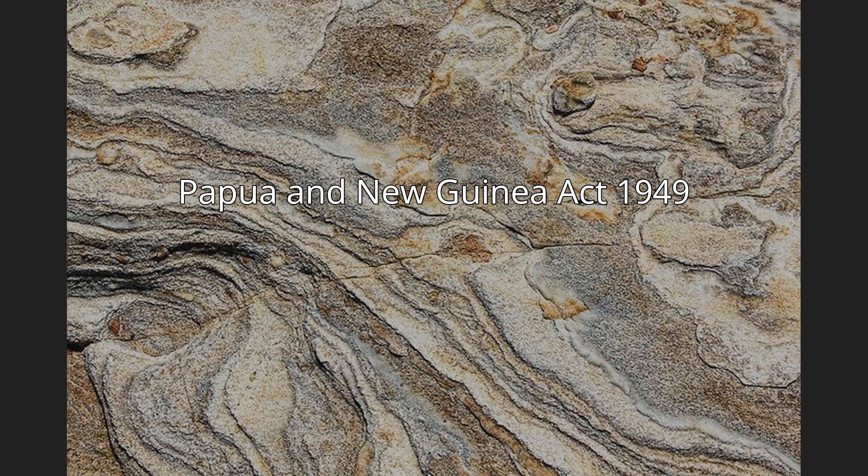The Papua and New Guinea Act 1949 was an Act passed by the Parliament of Australia. It replaced the Papua Act 1905 and the New Guinea Act 1920, and changed the status of the territories of Papua and New Guinea by merging their administrations to form Papua and New Guinea.